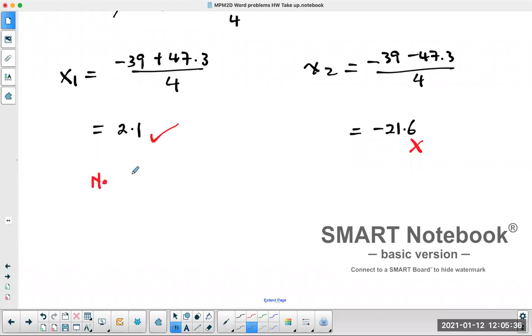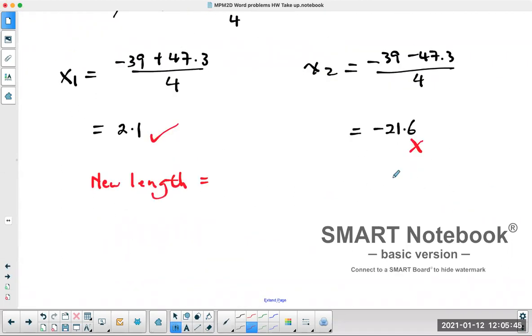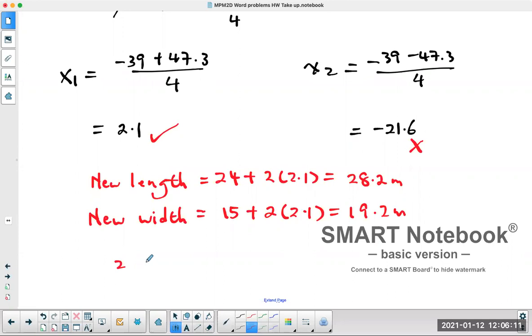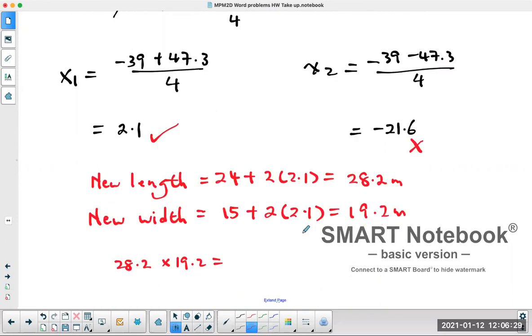So what does that mean? The new length is equal to 24 plus 2 times x, which is going to be 28.2 meters. The new width is going to be 15 plus 2x, so 15 plus 4.2 is 19.2 meters. If you take the new length multiply by the new width to double check, 28.2 times 19.2, it's roughly 541.44, so that's about 540. We're rounding off, so our area here is slightly bigger than 540.